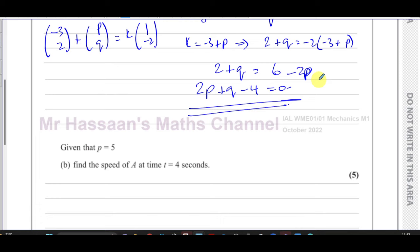Then part b says given that p equals 5, find the speed of A at the time t equals 4 seconds. So we need to find the speed of A.